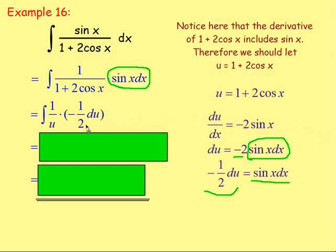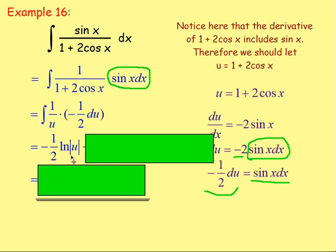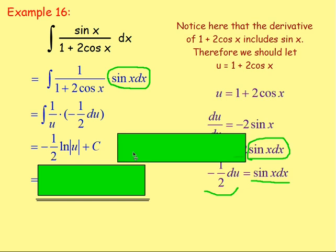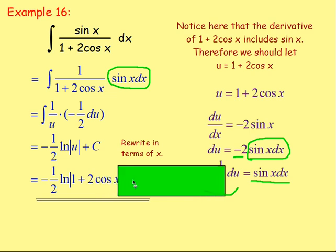After substituting: negative one half, if you integrate that, stays as negative one half. Integrating 1 over u gives ln u — and when you integrate and have ln, you put in the modulus sign. So we have negative one half ln|u| plus c. But we wouldn't leave it in terms of u — we replace u with what it equals. We said u equals 1 plus 2 cos x, so rewriting in terms of x: negative one half ln|1 plus 2 cos x| plus c. That is your answer.